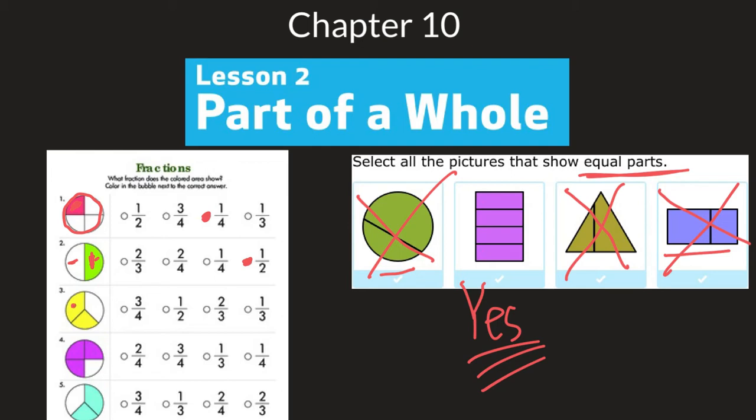Here we have two pieces shaded in out of one, two, three total pieces. So two-thirds of our circle is shaded in. And here we have one, two, three out of four. Three out of four, so three-fourths of our shape is shaded in.